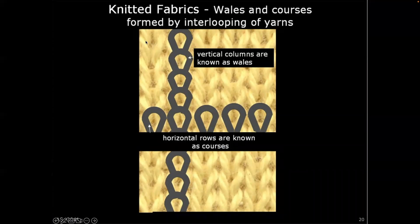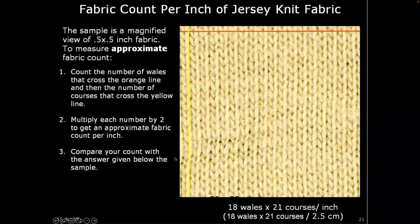To count wales in this picture: one, two, three, four, five wales. To count courses: one, two, three, four, five, six, seven, eight courses. On a fabric, to calculate fabric count, you do it in one inch — draw a line for one inch, count the wales and courses within it. This sample shows 18 wales and 21 courses in one inch.